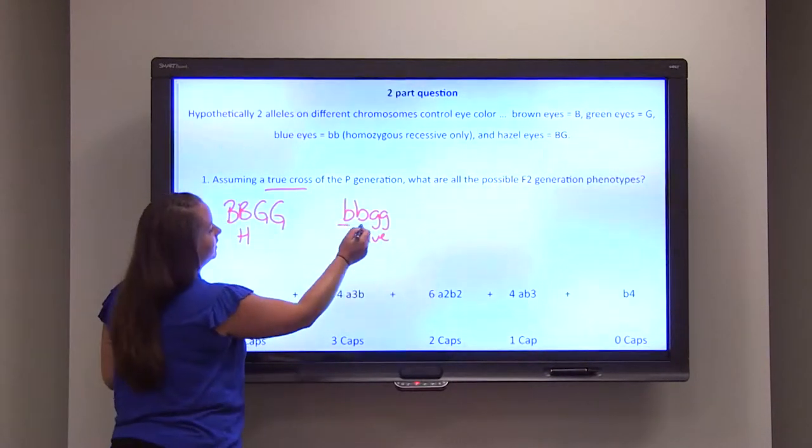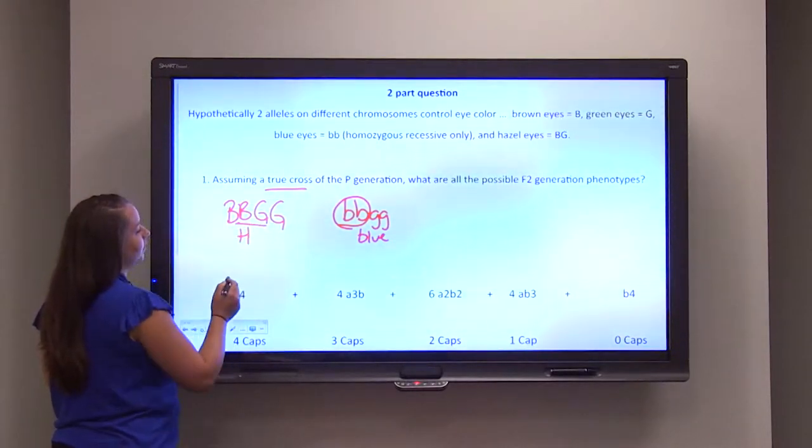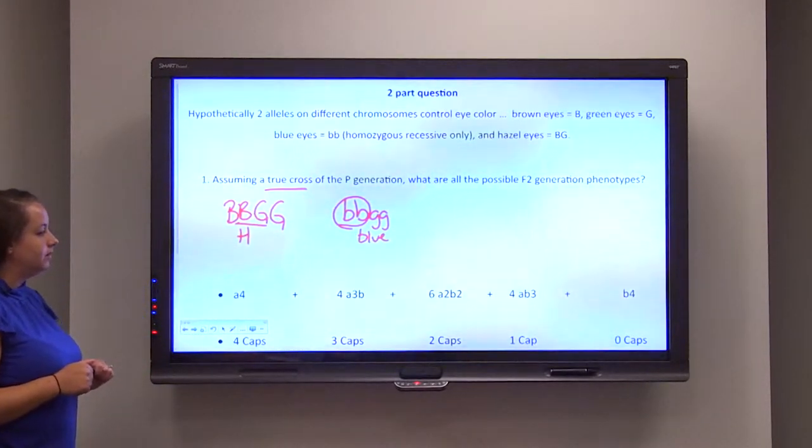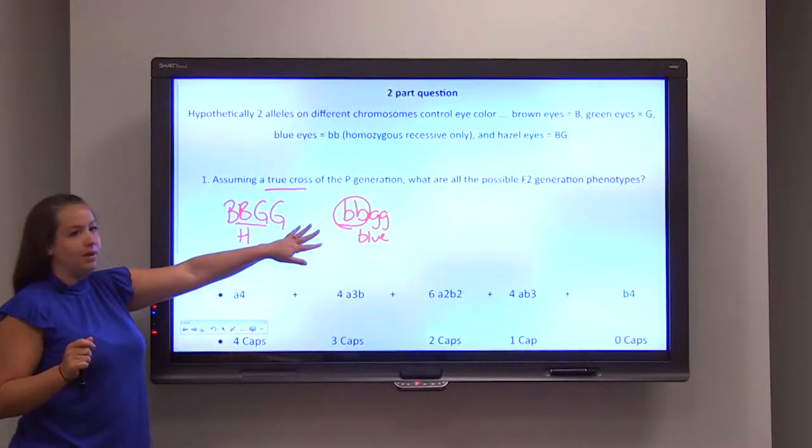Remember, they're blue because you contain this, hazel because you have at least one capital B and one capital G. So this is your true cross for the P generation.